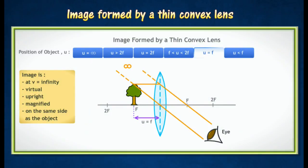When the object is placed at F, its image will appear at infinity. The image formed is virtual, upright, magnified, and on the same side as the object. This position is used for the eyepiece of an astronomical telescope.